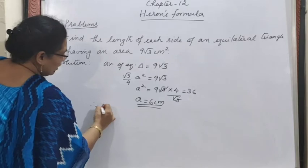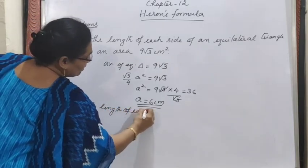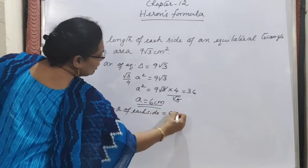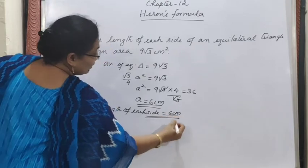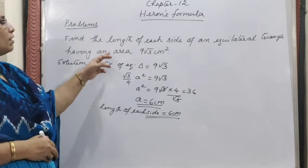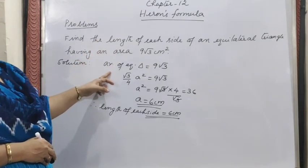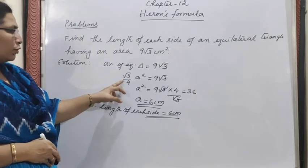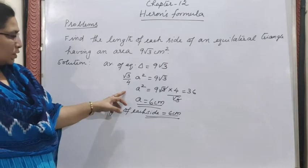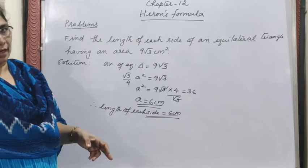Since it is a word problem, we conclude: the length of each side equals 6 cm. For an equilateral triangle, all sides are equal, so each side is 6 cm. To recap: given the area of the equilateral triangle, we applied the formula √3/4 × a² = 9√3, substituted, calculated a² = 36, and found the length of each side = 6 cm.